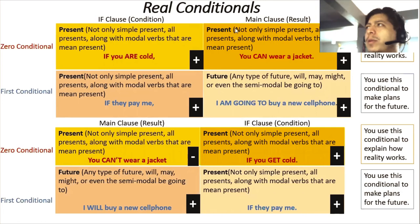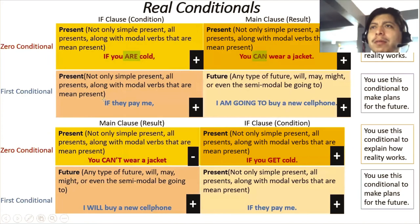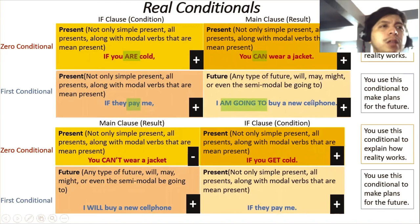In the zero conditional: 'If you are cold, you can wear a jacket' — both clauses in present, explaining reality. In the first conditional: 'If they pay me, I am going to buy a new cell phone' — if clause present, main clause future, making plans. You can also reverse the order: 'I will buy a new cell phone if they pay me.' Clauses can be affirmative or negative, and subjects can differ.